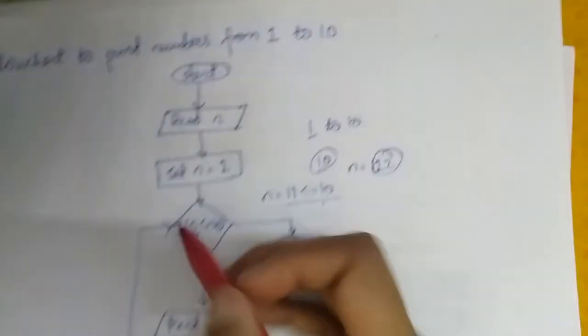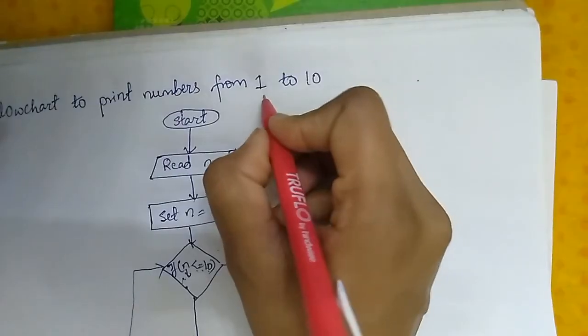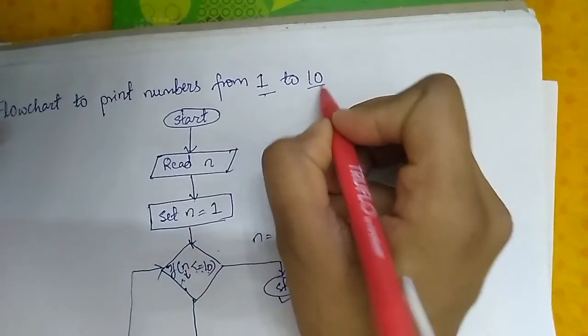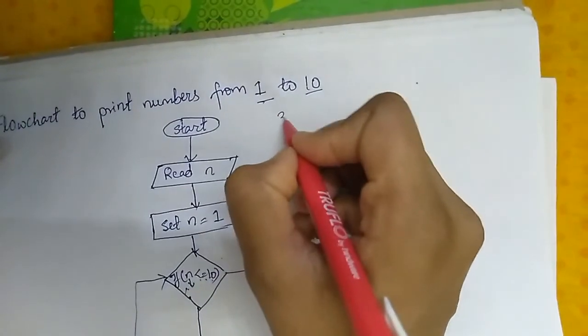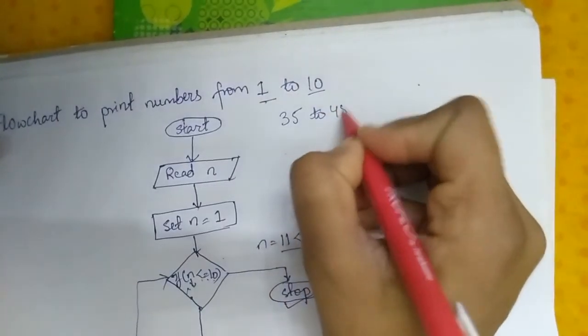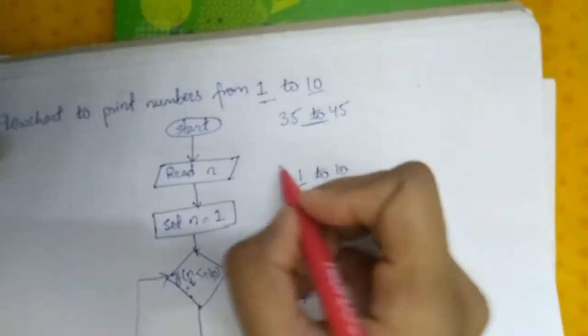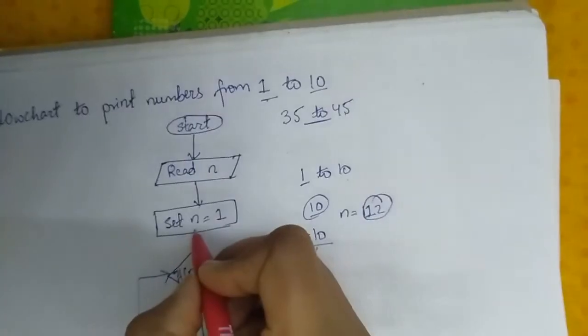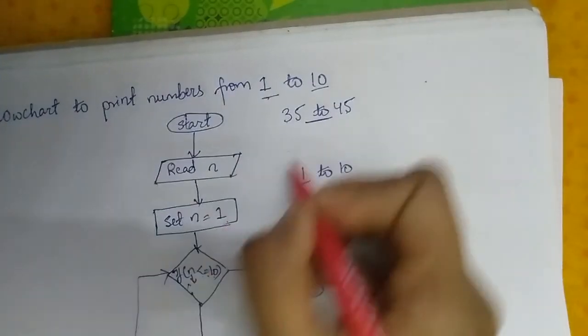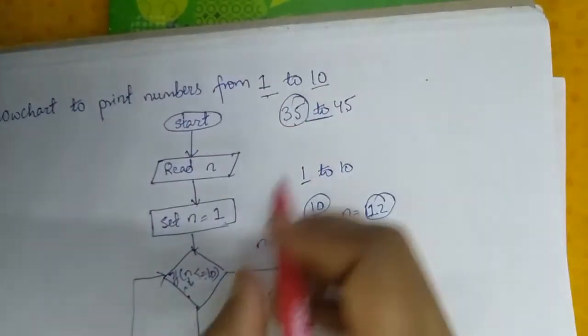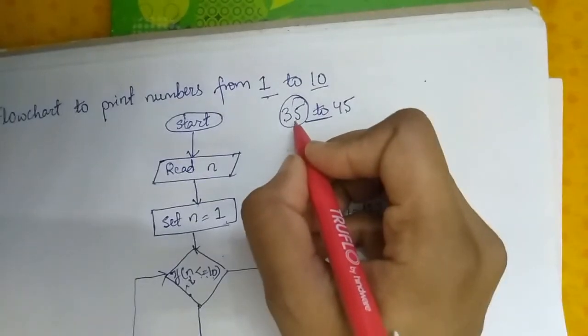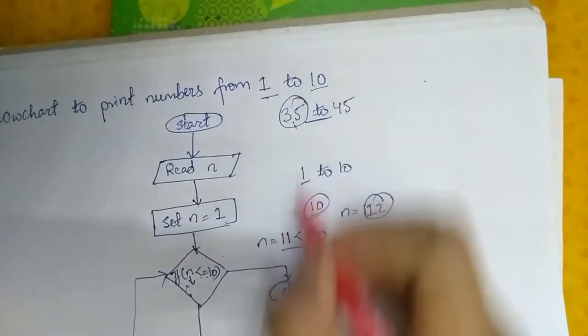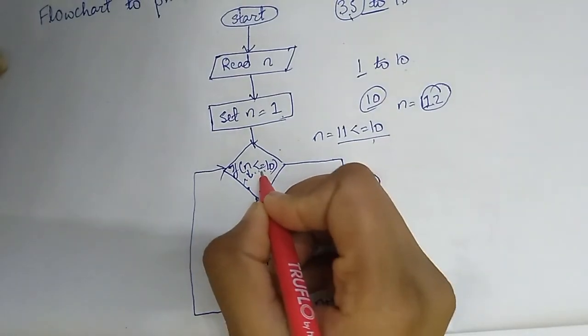So for printing any numbers you have to first see the first number and the last number. If suppose you have to print 35 to 45, numbers between these, you have to set the value of n to the first number 35. And when you are adding 1 to the value of n, you have to write less than or equal to the last number.